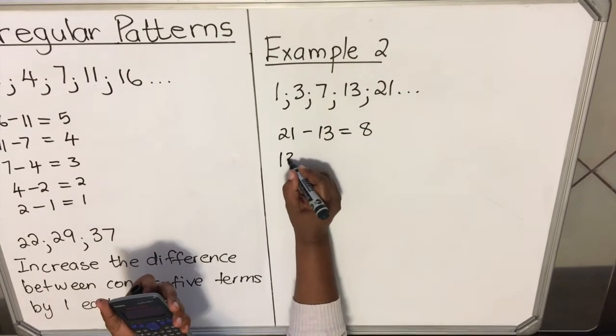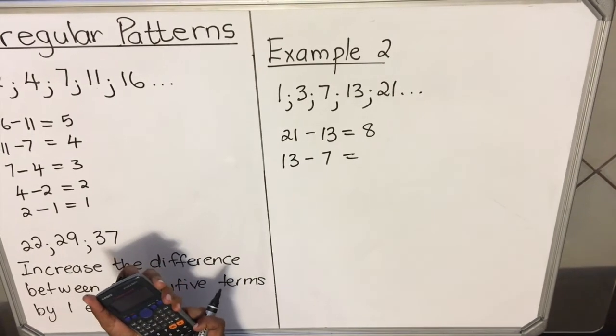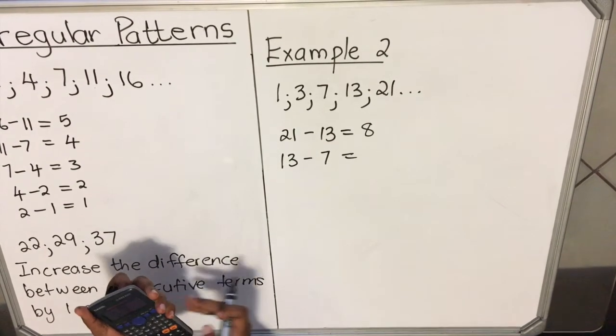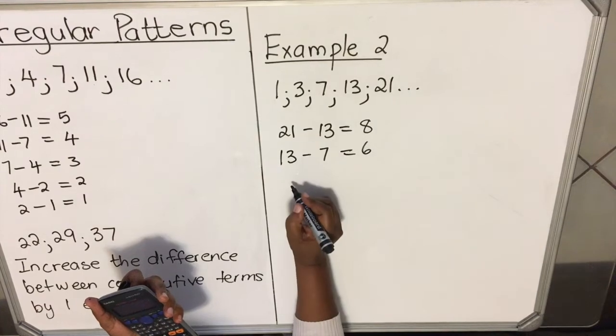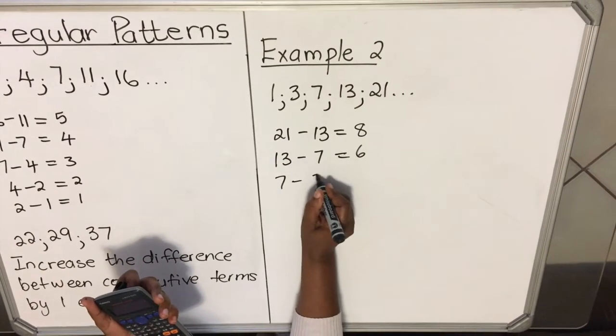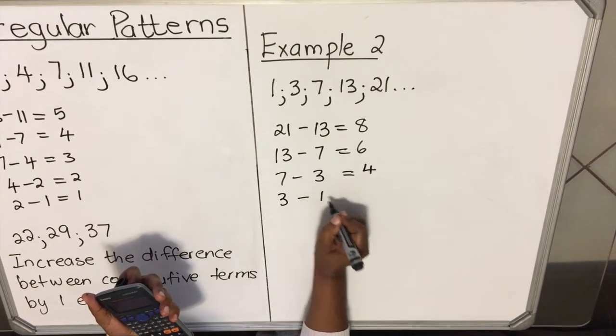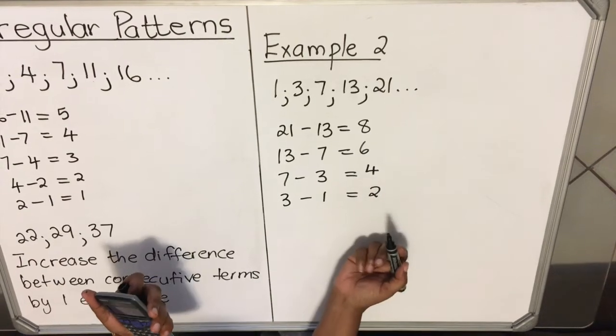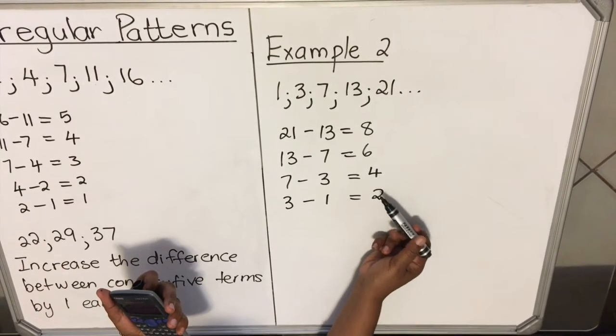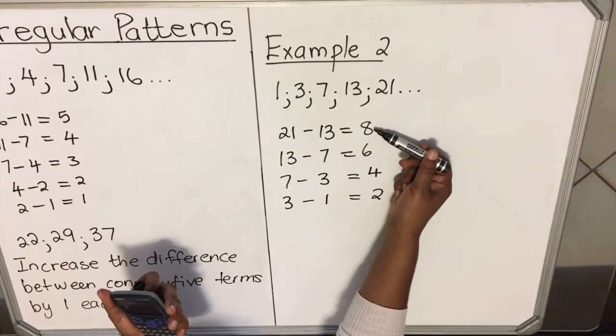Let's see if this one is the pattern. 21 minus 13 is 8. 13 minus 7 is 6. 7 minus 3 is 4. And then 3 minus 1, you get 2. When you look at my difference, do you see it's increased by 2 every time?